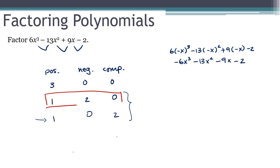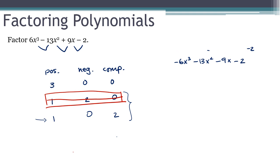So the option with one positive, two negative, and zero complex is not a possibility. I'm going to have either three positive roots or one positive and two complex ones. Now let's clean up a little and start thinking about the rational root theorem.